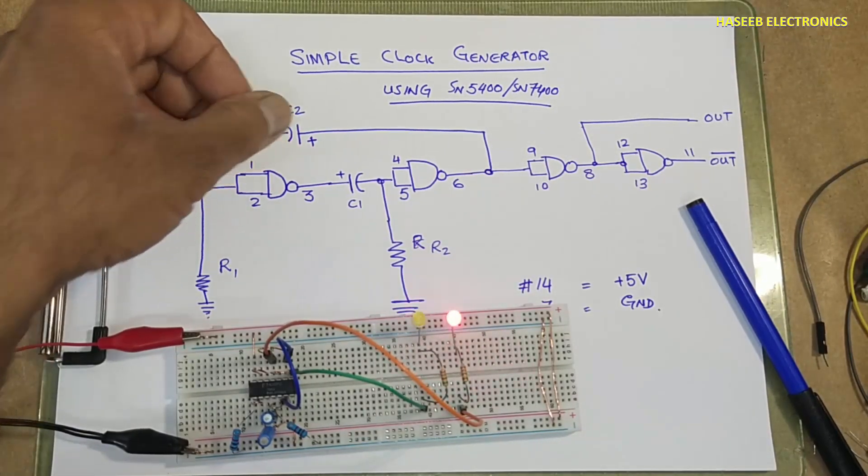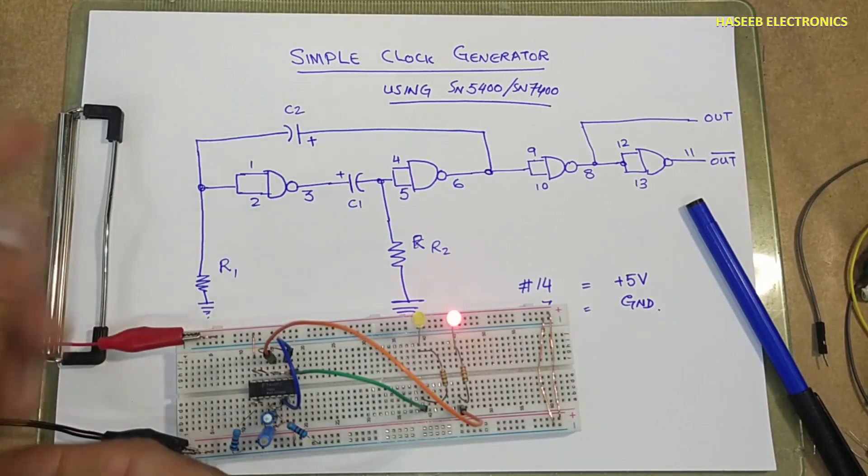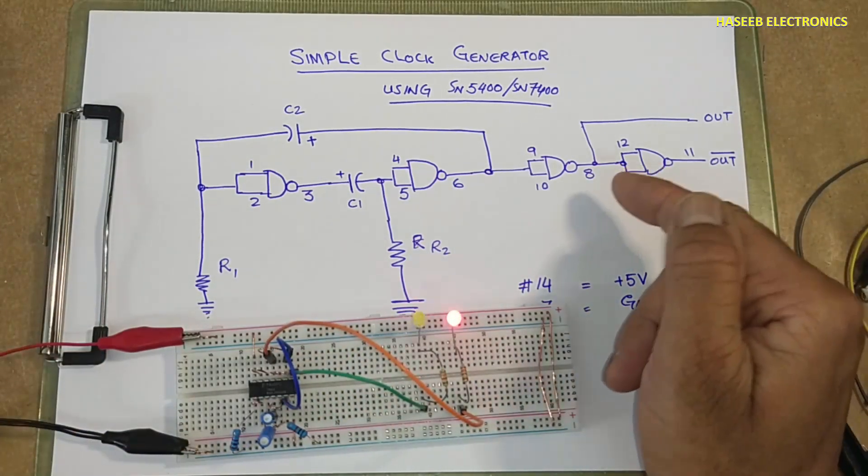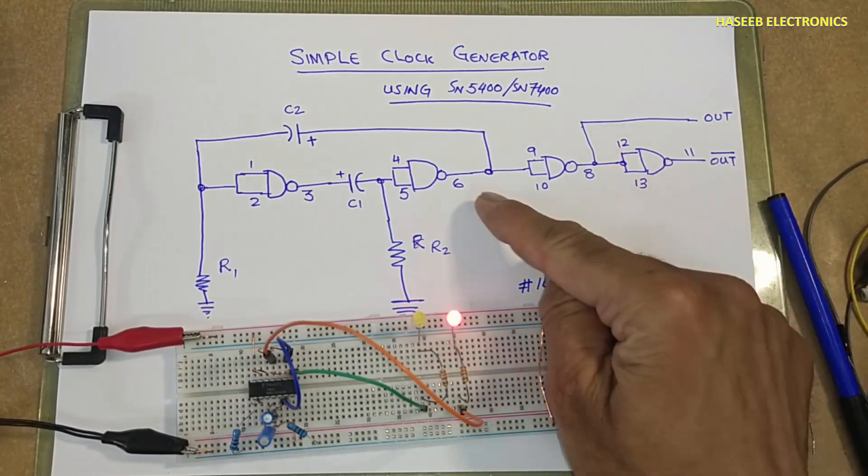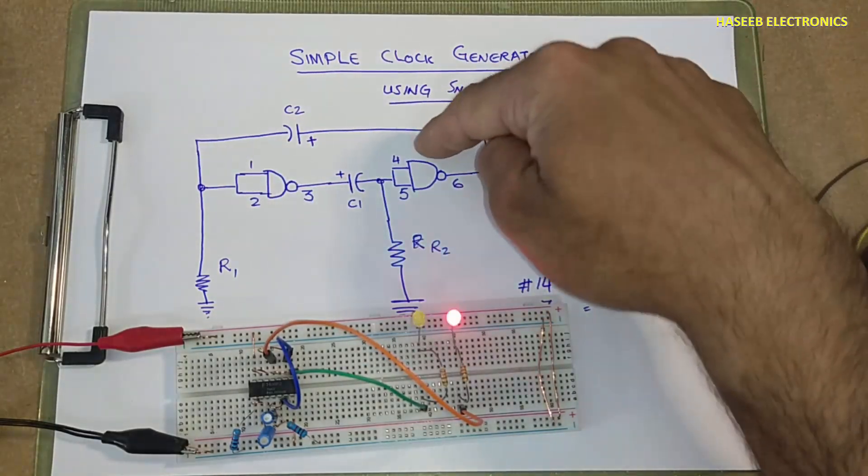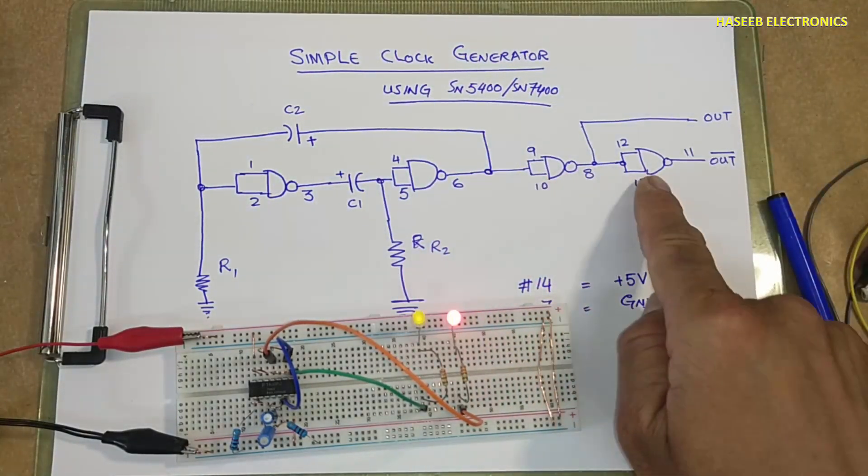If you use 47 microfarad, 100 microfarad, 220 microfarad and resistor 1 kilo ohm, 2 kilo ohm, 3 kilo ohm, we can receive our required frequency. Pin 6 until here this is the oscillator circuit, then this is buffer, and here is inverter.